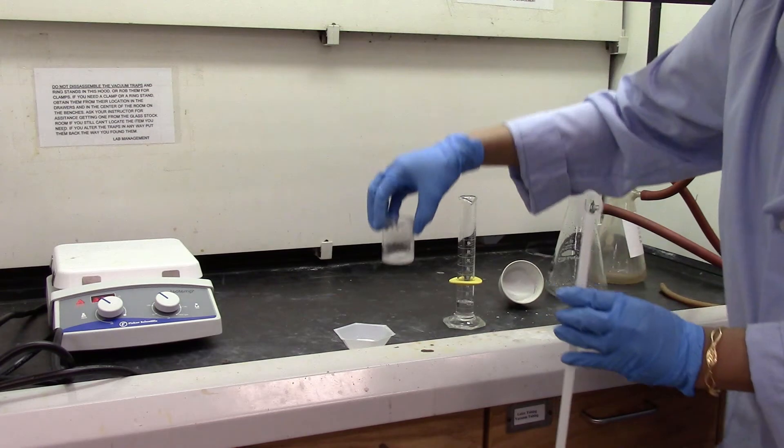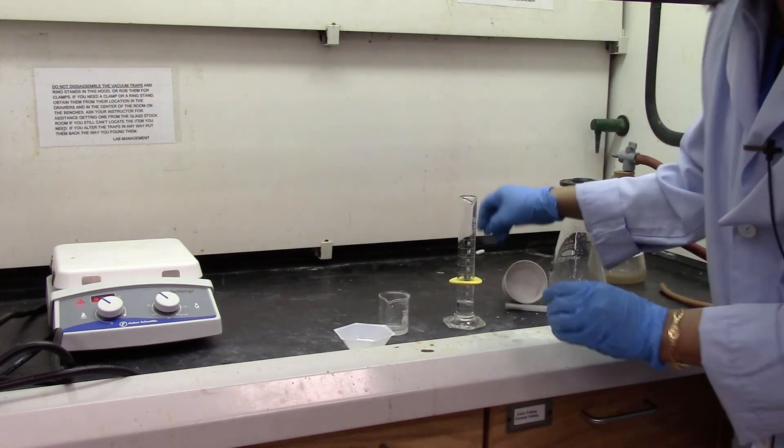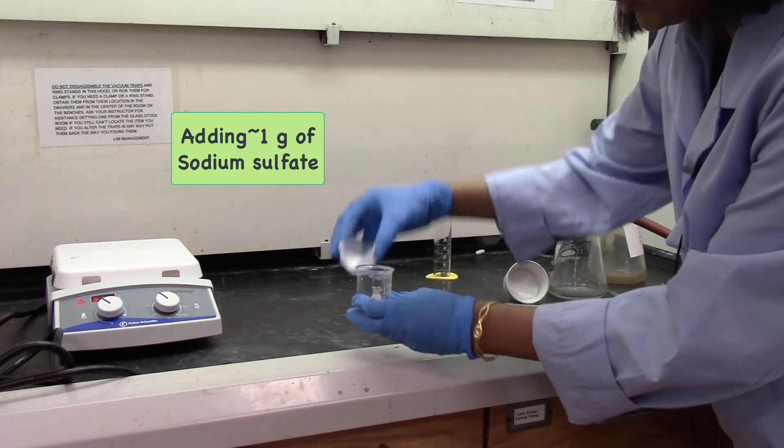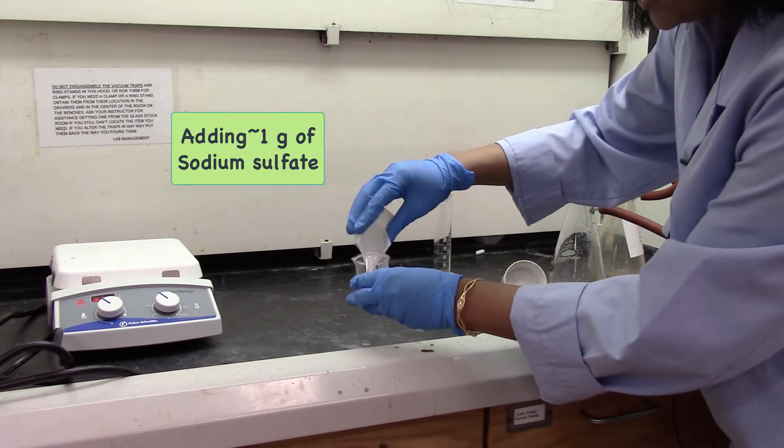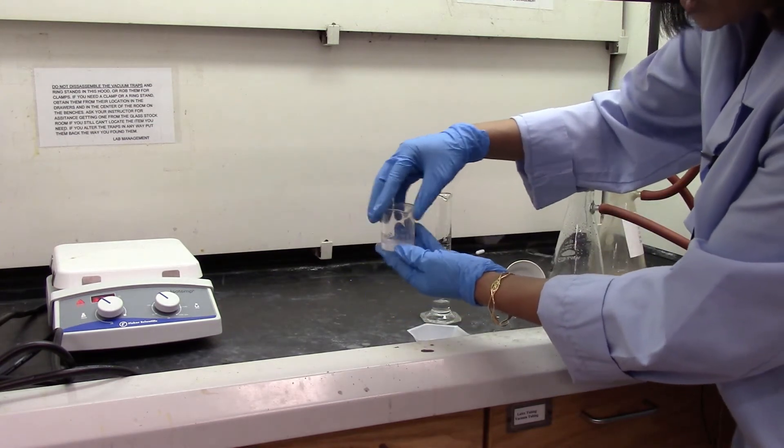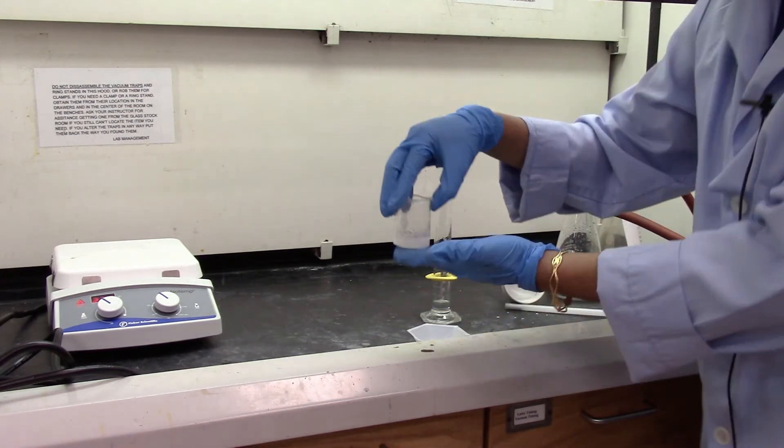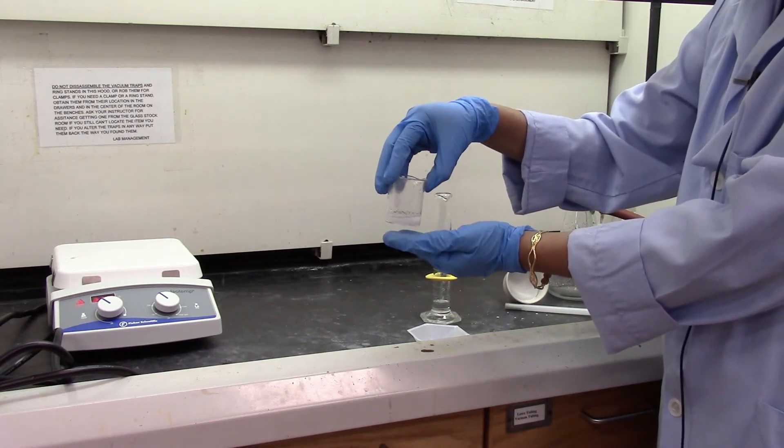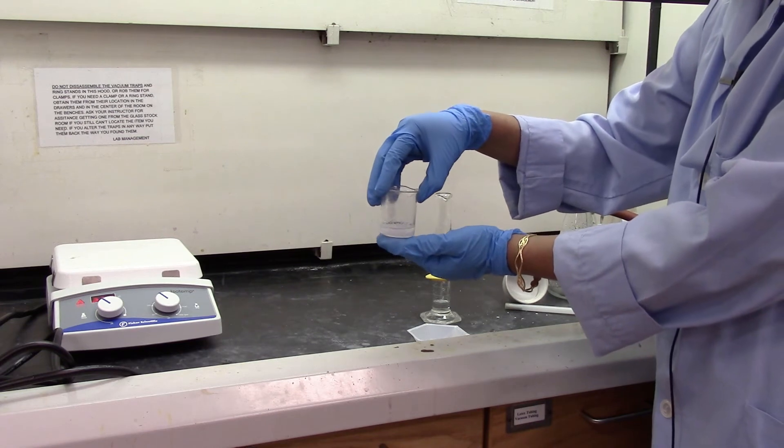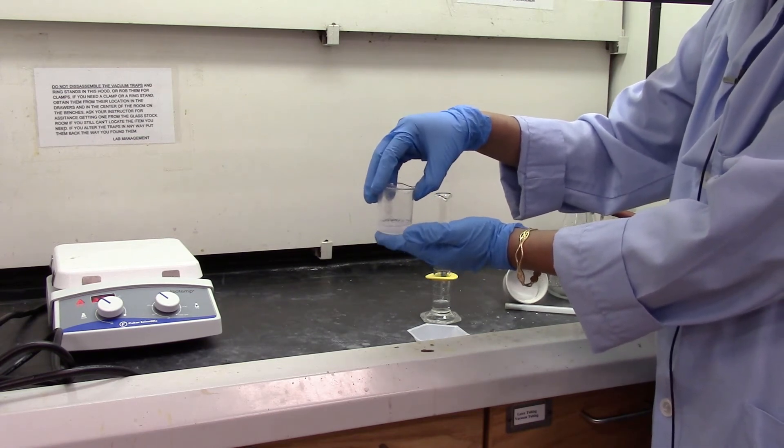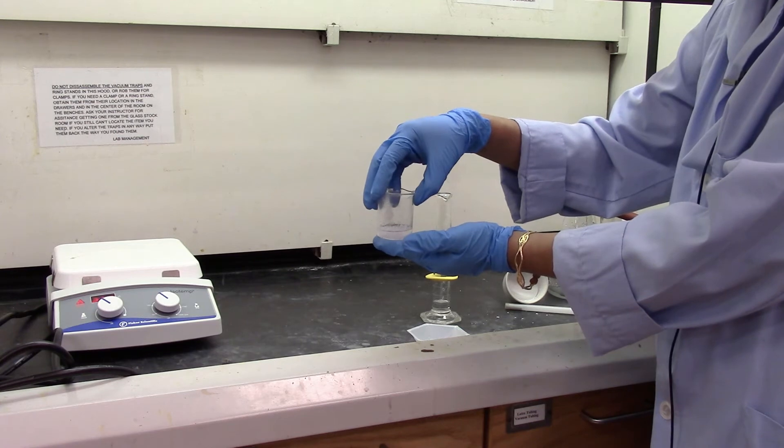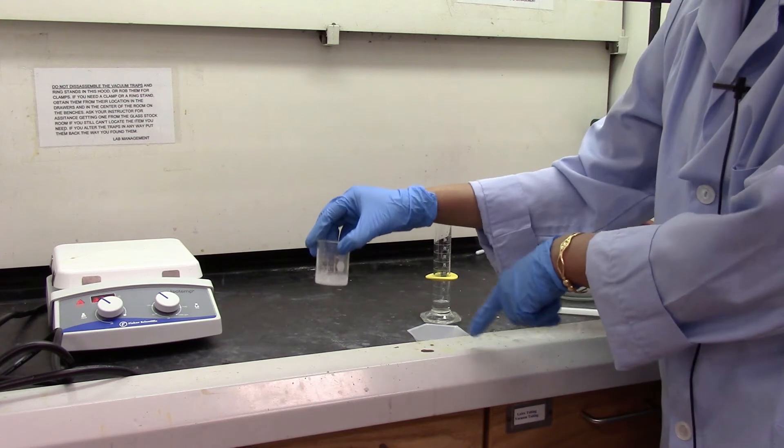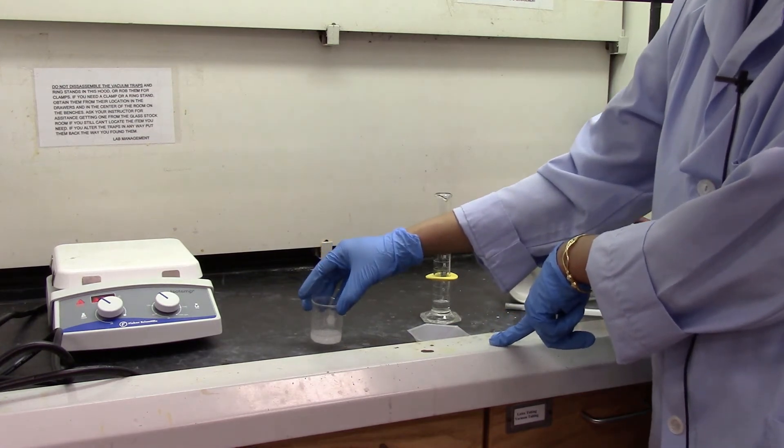I'm going to add some sodium sulfate drying agent to my product solution which is in dichloromethane. Give it a swirl. And then let it sit for about 10 minutes for the dichloromethane solution to dry off. If there's any moisture in the dichloromethane the sodium sulfate would absorb it. So I will let it sit, have it dry, and then transfer the liquid into a pre-weighed Erlenmeyer flask to collect my product.